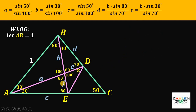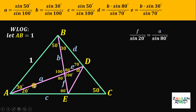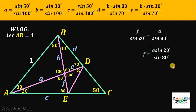Next, let this side length equal f. We will use again the triangle on the bottom with angles 20 degrees, 80 degrees, and 80 degrees. Using sine law: f over sine of 20 degrees equals side a over sine of 80 degrees. It follows that side f equals a multiplied by sine 20 degrees over sine of 80 degrees.